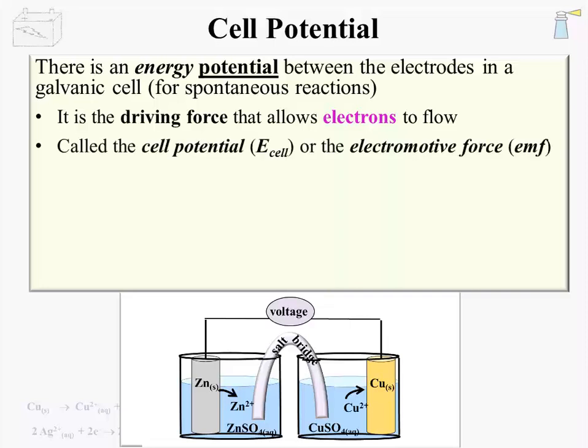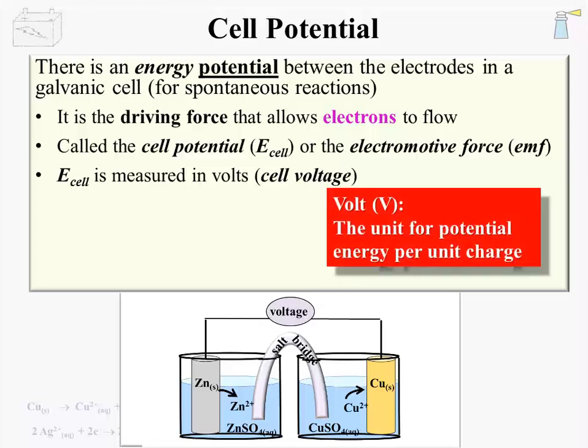Electrical potential and gravitational potential are examples of forces that we can only detect by their action on objects or particles. In the galvanic cell, the electrical potential is called the cell potential, or E-cell for short. It is also called the electromotive force, or EMF — either term can be used. In a practical sense, E-cell is measured in volts and is called the cell voltage. The volt is defined as the unit for potential energy per unit charge. A larger voltage is analogous to having an object suspended higher above the ground — larger potential energy.